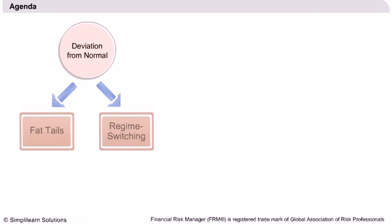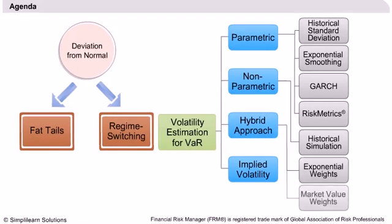The main agenda of our discussion will be estimating volatility using different approaches. We will begin by discussing the real distributions of return in practical scenarios. In reality, the volatilities change with time, resulting in non-normal distribution with fat tails. We will learn how these fat tails underestimate our simple VAR calculations done assuming normal distribution. We will also introduce a regime switching model in which the volatilities exhibit normality during phases or regimes and then change to a new level. Our estimation techniques for volatility estimation would include parametric, non-parametric, and hybrid approaches.